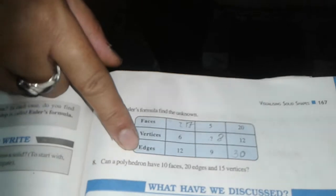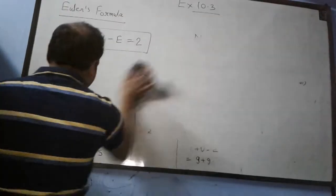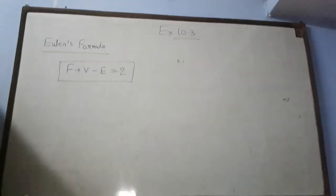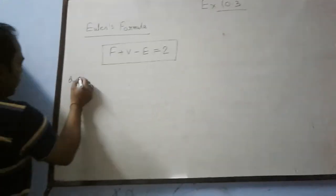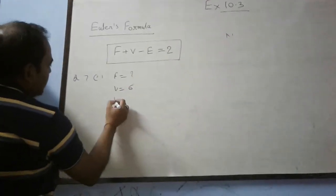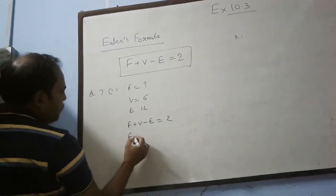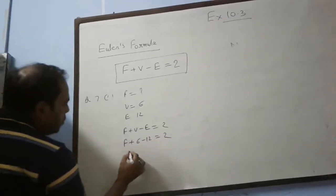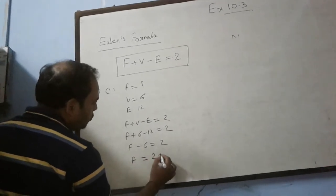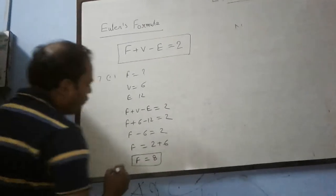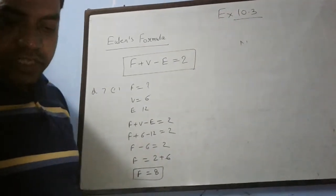Last question number 7. Using Euler's formula, find the unknown. First part: faces we have to find, V is 6, E is 12. F plus V minus E equals 2. Put this value: F plus 6 minus 12 equals 2. F minus 6 equals 2. F is equal to 2 plus 6. Faces will be 8.